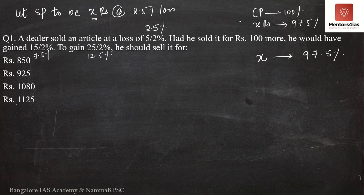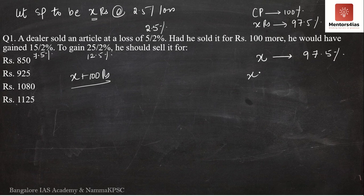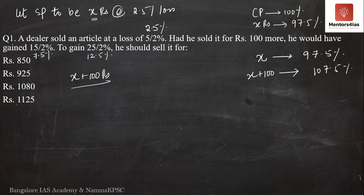The question further says that if he had sold it for rupees 100 more — meaning X plus 100 rupees — he would have gained 7.5 percent instead of losing 2.5 percent. So X plus 100 equals 107.5 percent, because he is gaining 7.5 percent with respect to the cost price, not the initial selling price. It is always with respect to the cost price.